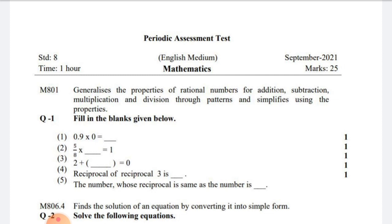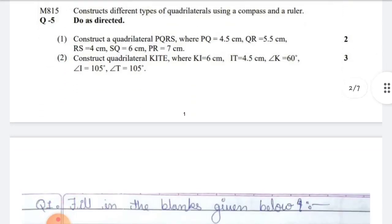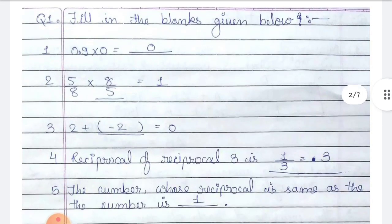Question number one is fill in the blanks. I have attached all the answers on the next page. Here we have the answers. Number one: 0.9 multiplied by 0 is equals to blank — any number multiplied by 0 will be 0.